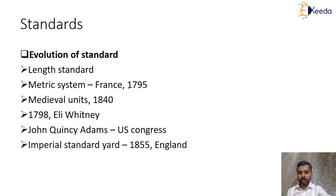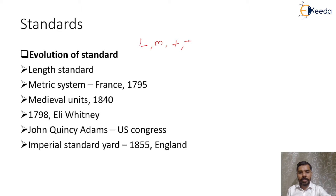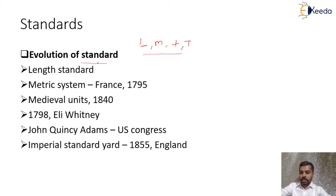The different fundamental quantities that should be reproduced under a standard are: length, mass, time, and temperature. These are the fundamental quantities to be considered when looking at the measurement of any system.